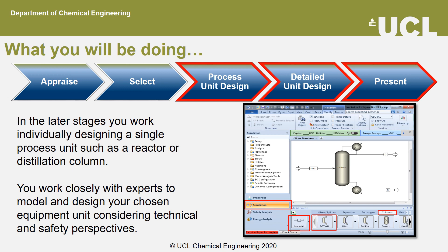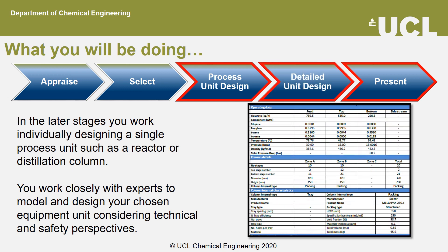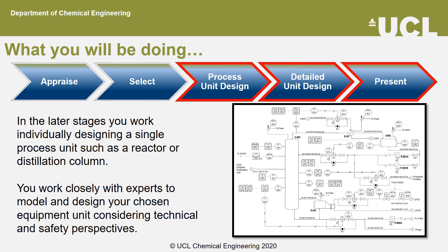Once the design is complete, you will summarize information in a report and technical specification sheet. Here is an extract of one student's specification sheet. In the detailed unit design stage, the design is developed further and captured in a piping and instrumentation diagram, such as the one shown here for a distillation column used to obtain a pure hydrocarbon product by students from the 2019-2020 academic year. A further safety study on the individual unit is also performed at this point. Students are using software commonly encountered in industry and producing documents as commonly developed and used in industry. This stage ends with students presenting their design to academics from the department who are taking on the role of Bentham Corporation Board members.